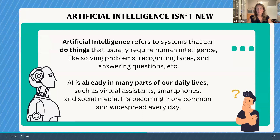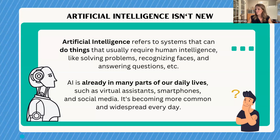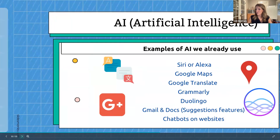Just a quick overview to make sure we understand exactly what we're talking about here in terms of AI. Artificial intelligence is not new. AI in general refers to systems that can do things that usually require human intelligence — things like solving problems, recognizing faces, answering questions, etc. We are all using AI already, and we have been for quite some time. It's in our daily life: virtual assistants, smartphones, social media, and it's becoming more widespread every day.